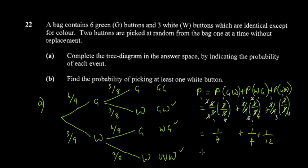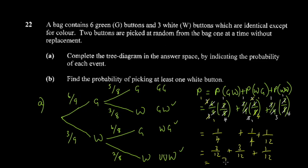Adding the fractions: 1/4 plus 1/4 plus 1/12. Using 12 as the common denominator, multiply the quarters by 3: 3/12 plus 3/12 plus 1/12 equals 7/12. So the required probability is 7 over 12.